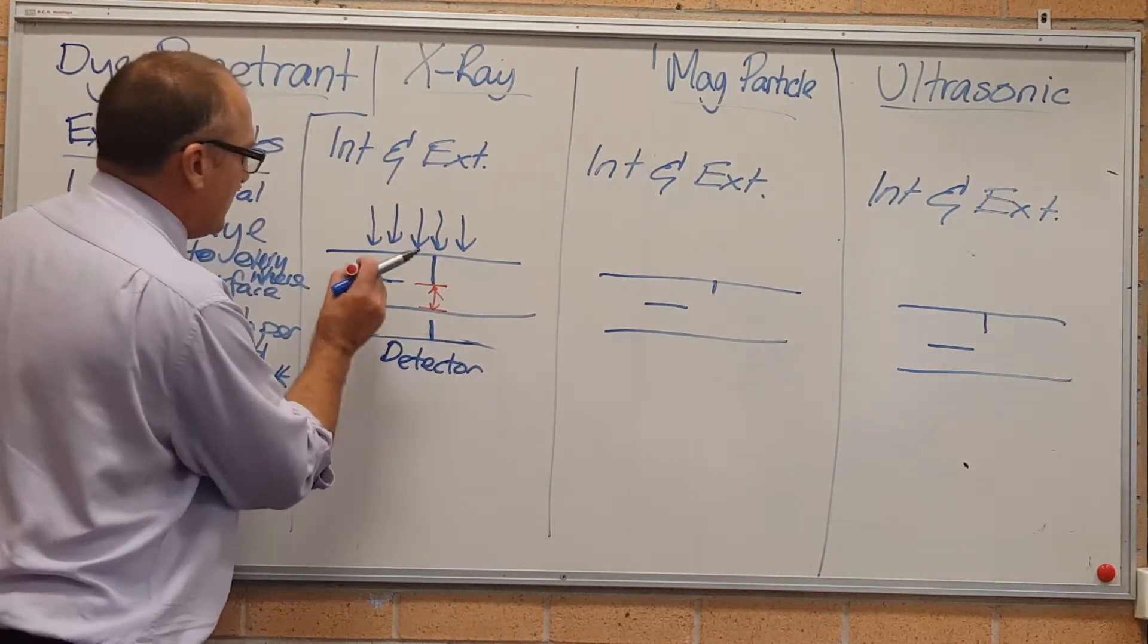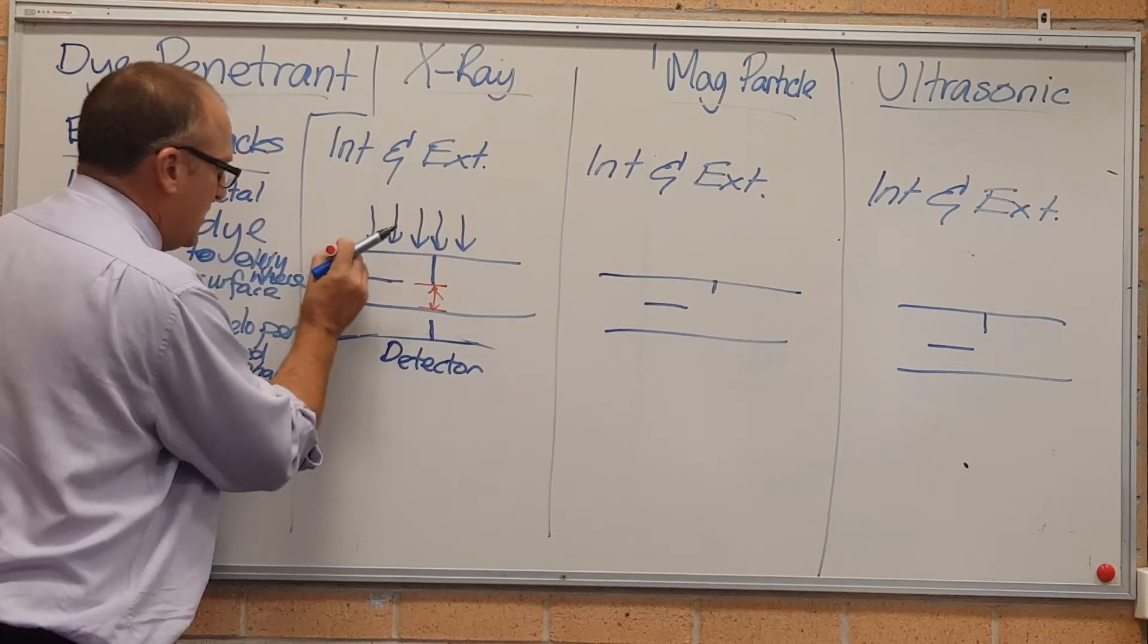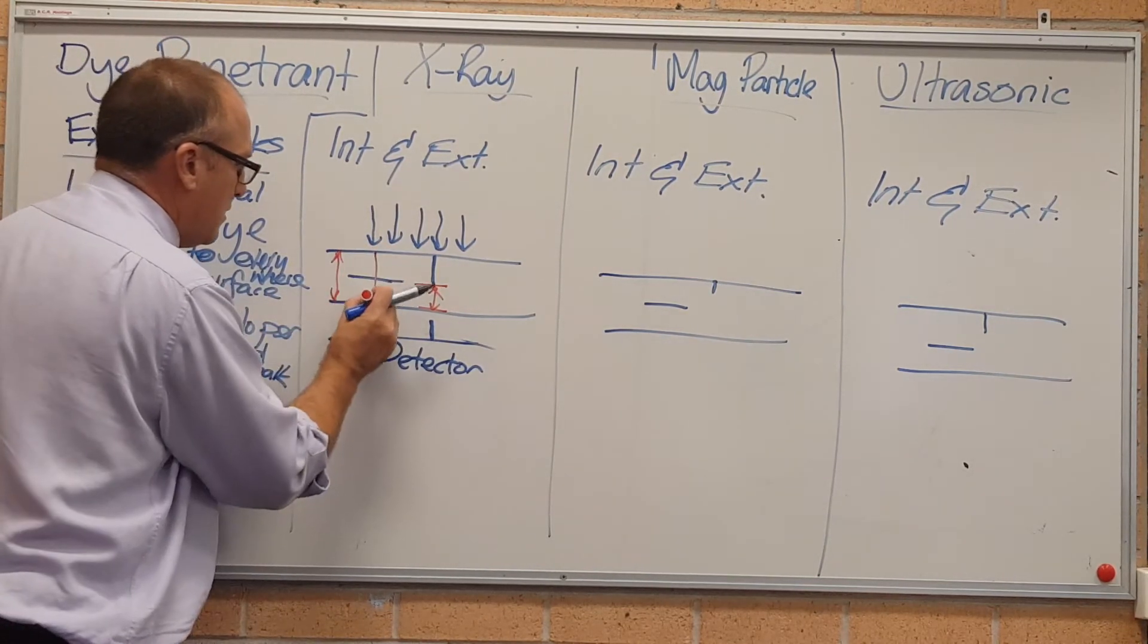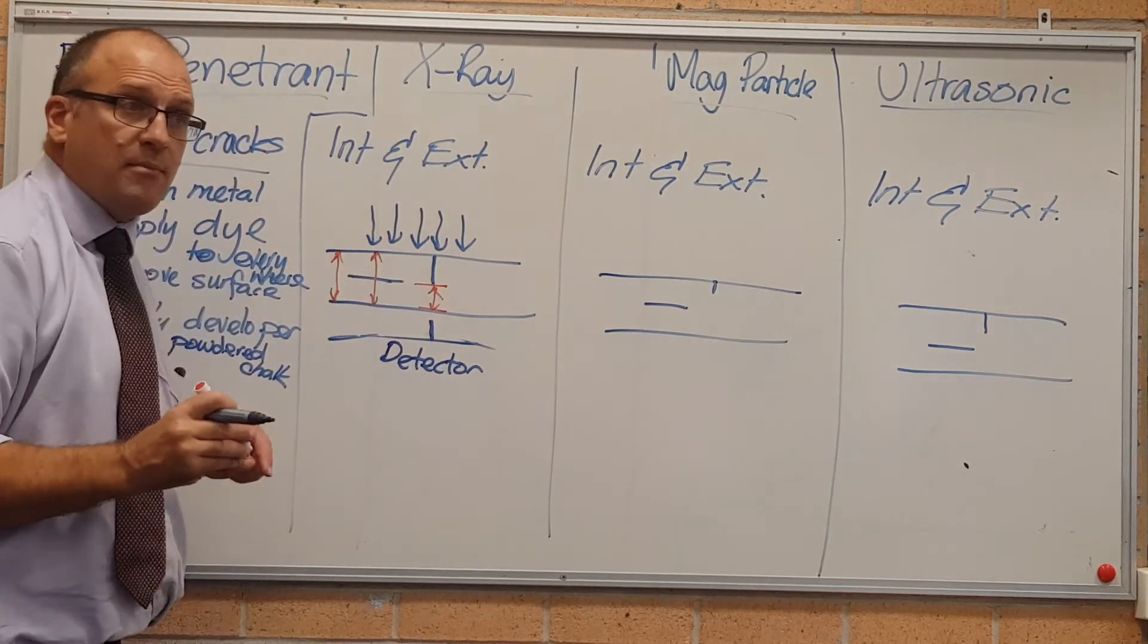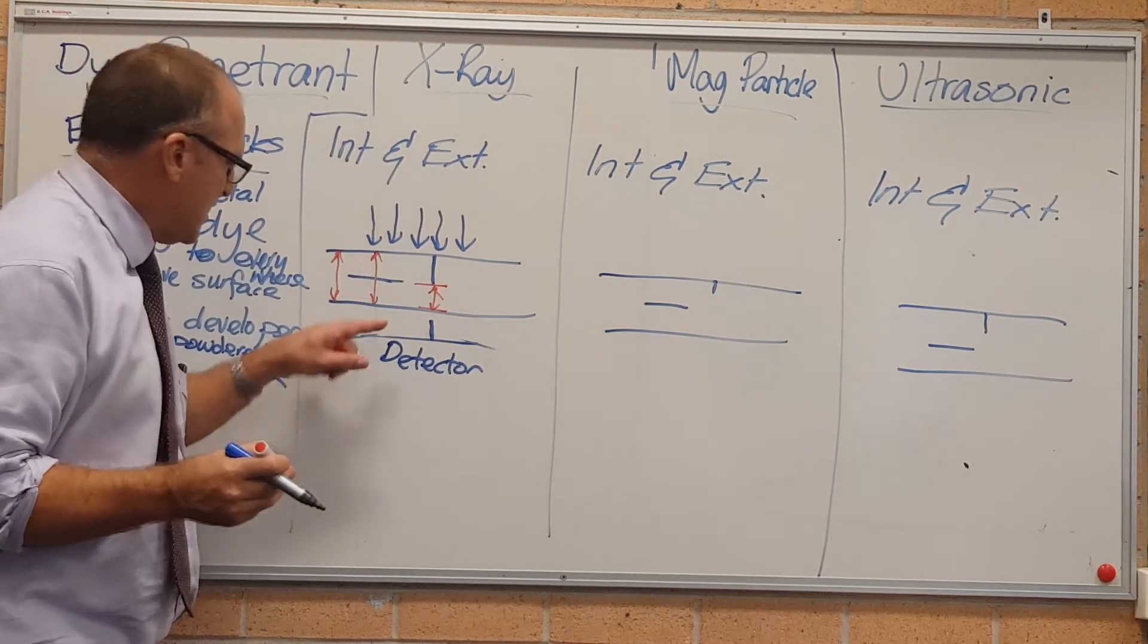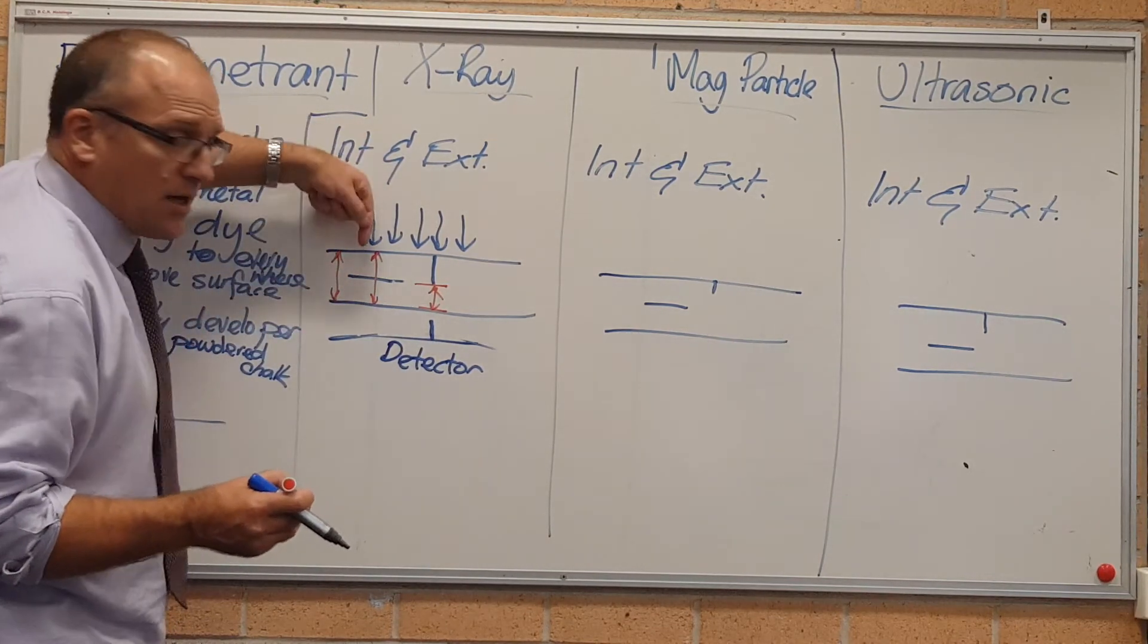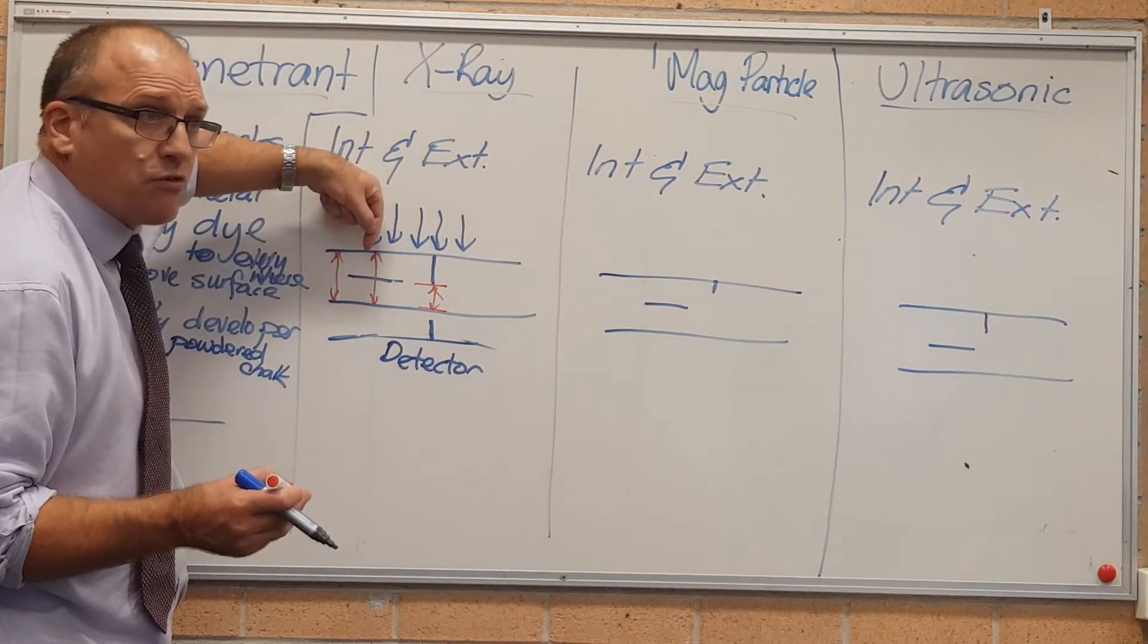If you think about it, this one down here, the X-rays have got to travel through that much metal. Here, they have to travel through the identical amount. So it doesn't really show up a horizontal crack, or a crack that's 90 degrees to the direction of path of the X-ray.